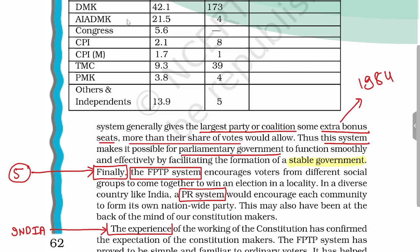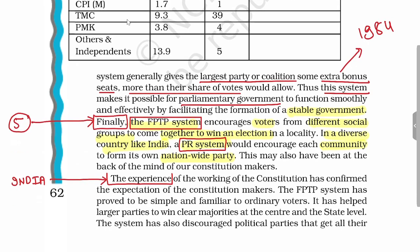The fifth advantage is that in FPTP, voters from different social groups can come together to win an election in a locality. In a diverse country like India, if we had proportional representation, every community based on caste and religion would form their own nationwide party, leading to identity-based politics where every voter votes for their own caste or religion. This would have divisive tendencies in India, which is why our constitutional framers adopted FPTP as the method of election in Lok Sabha.